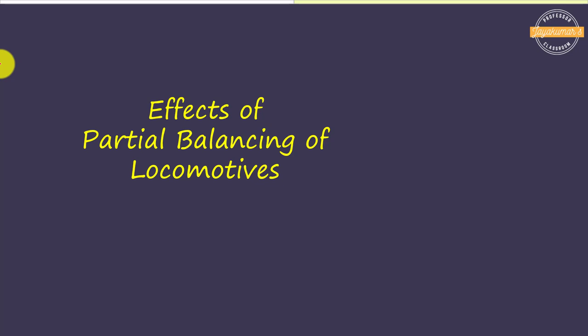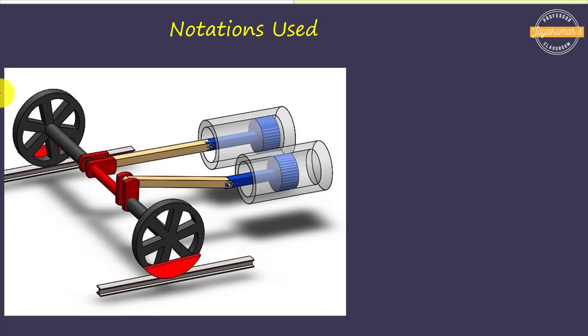We are considering a two-cylinder locomotive engine. There will be unbalanced forces acting along the line of stroke as well as perpendicular to the line of stroke. Because of this unbalancing, we call it partial balancing. Due to this partial balancing of locomotives, it will create some undesirable effects. We are going to discuss the effects of partial balancing of locomotives and introduce the notations to be used in this study.